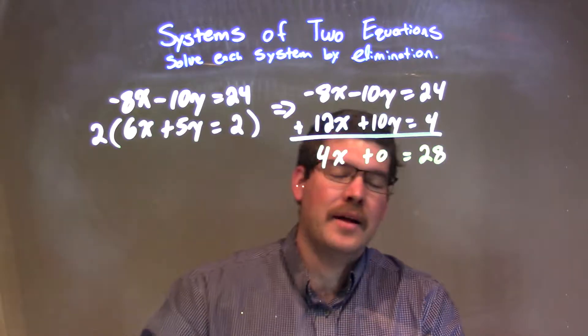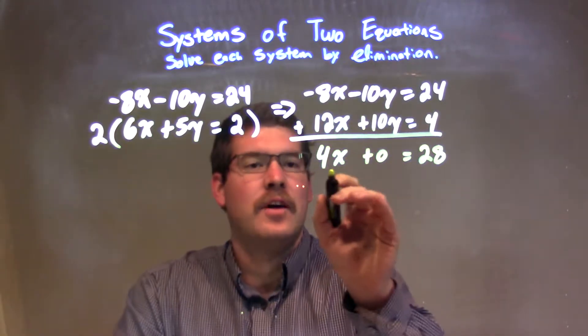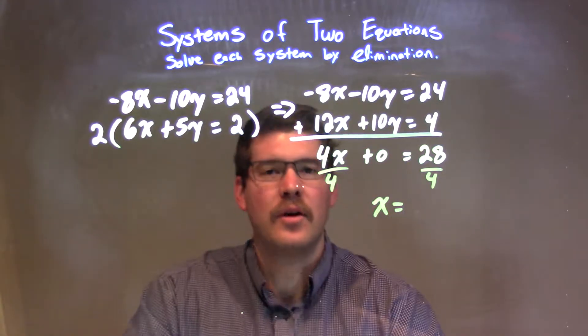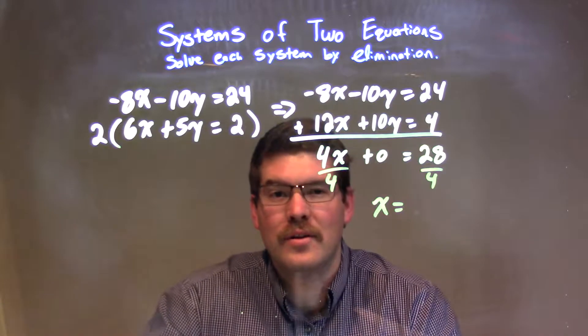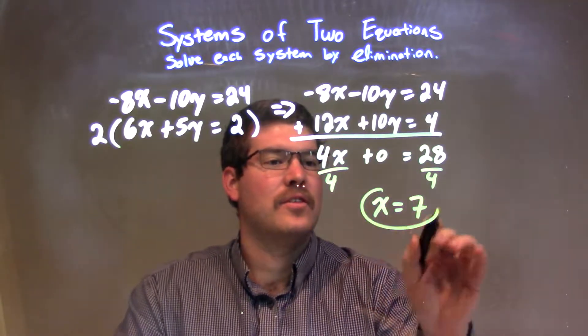Now we can eliminate the 0, we don't really need that. I'm going to get x by itself, so I'm going to divide by 4 on both sides. That leaves x by itself, and 4 goes into 28 seven times. So x is just 7.